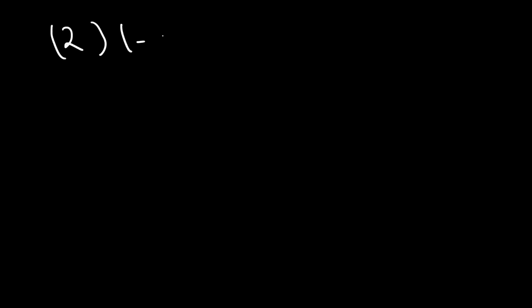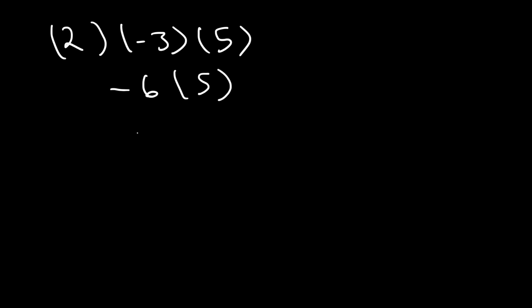What's 2 multiplied by negative 3 times 5? 2 times negative 3 is negative 6. Negative 6 times positive 5 gives us a negative answer — negative 30. Whenever you need to multiply three integers, just take it one step at a time.